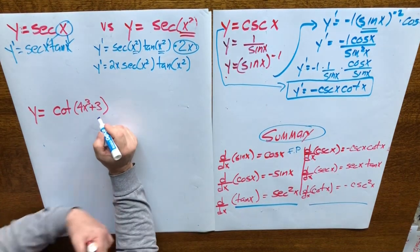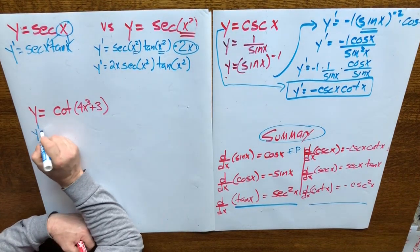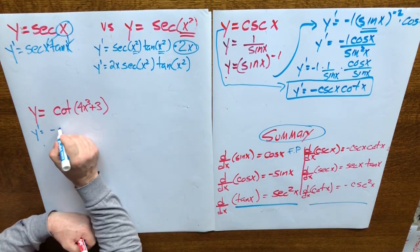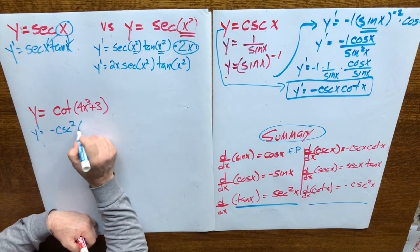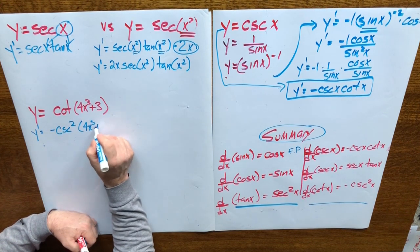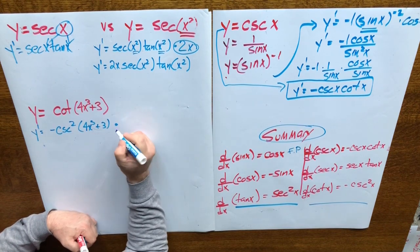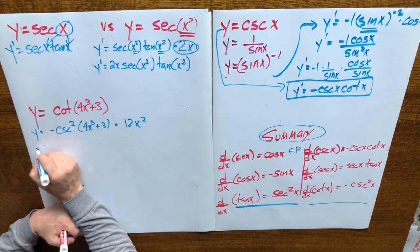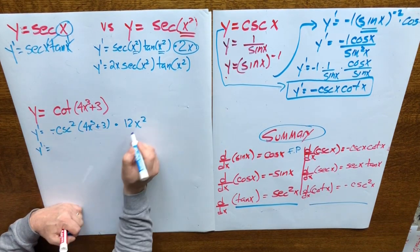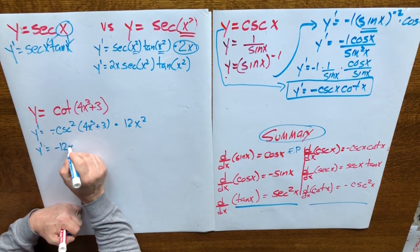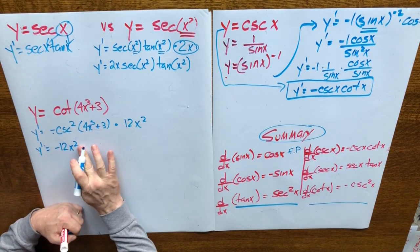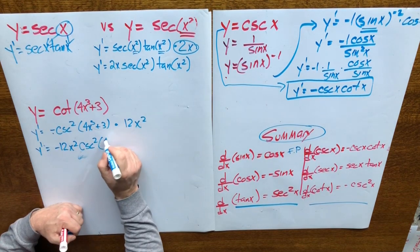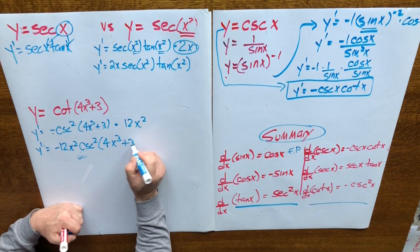Here's another one with a complicated argument. Y prime equals: what's the derivative of cotangent? The derivative of cotangent is negative cosecant squared. So it's negative cosecant squared, with the argument from the question carried into the derivative, times the derivative of the argument, which is 12x squared. So y prime equals negative 12x squared times cosecant squared of 4x cubed plus 3.